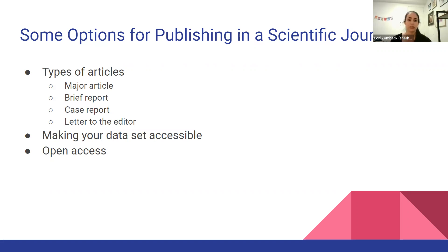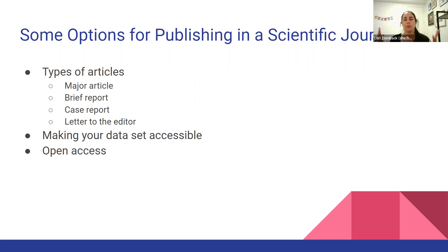Some other options for publishing your data: you can make your dataset accessible online, which makes everything more transparent and allows someone to try to reproduce your work. And you can publish open access. You may have noticed that sometimes you go to find a journal and see 'you do not have access to this journal, please pay $50.' Publishing open access is a way for you as the author to say: I want everyone to be able to access my research without any paywall — which is amazing for everyone else, but there is going to be a pretty steep price for you. If you're able to get funding from your institution, I would suggest trying to do that because it's going to be a lot to pay out of pocket.